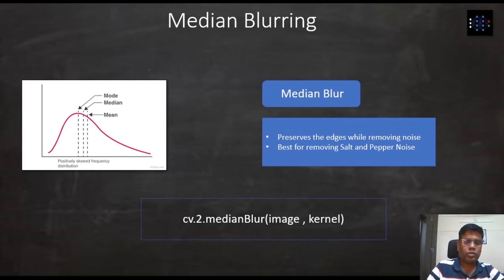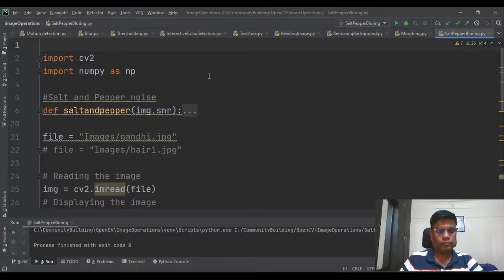Let us now look into the code part of it. Here is the code. First we will import the OpenCV library, CV2 and then numpy. I have a function which generates salt and pepper.